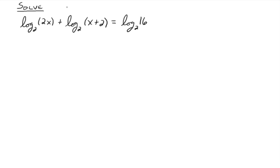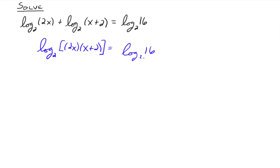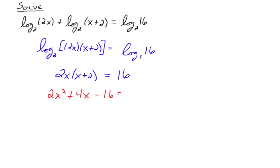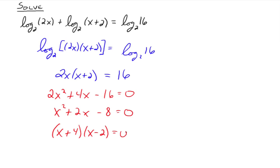On the left-hand side, we can rewrite this as one logarithm: log base 2 of 2x times x plus 2. Then we have one logarithm equal to one logarithm with the same base, which means the argument 2x times x plus 2 must equal the argument 16. So the equation to solve is 2x squared plus 4x equals 16. Bringing the 16 over gives a quadratic. Everything is divisible by 2, so x squared plus 2x minus 8 equals 0, which factors as x plus 4 times x minus 2 equals 0, giving x equals negative 4 and x equals 2.